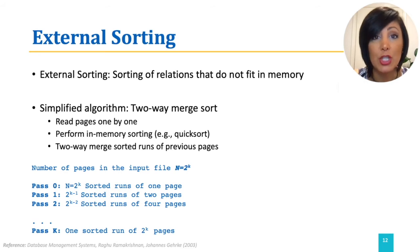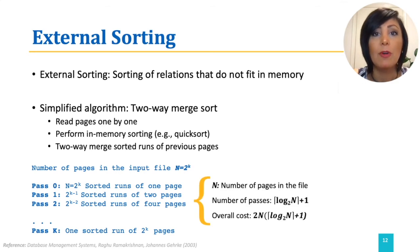This simplified version is possible with 3 pages of main memory. Practical implementations use many more pages. An analysis: if the number of pages in the file is N, number of passes has a logarithmic relation with N. The overall cost being the number of IOs needed for this operation will be the number of passes times 2N, because in each pass we read every page in the file, process it, and write it out.